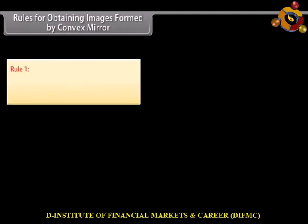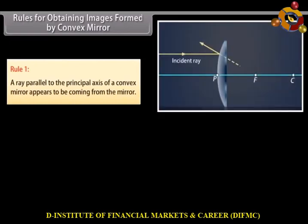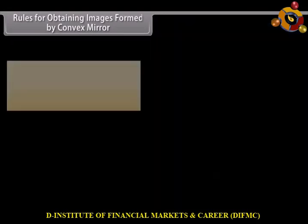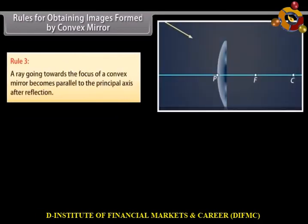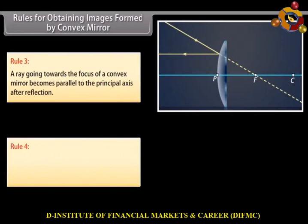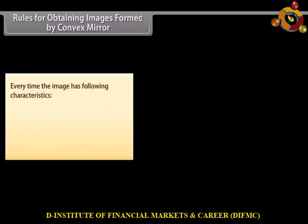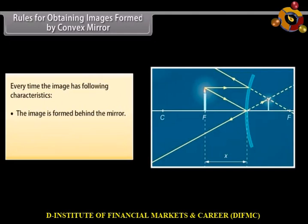Rules for obtaining images formed by convex mirrors. Rule 1: a ray parallel to the principal axis of a convex mirror appears to be coming from the focus behind the mirror. Rule 2: a ray going towards the center of curvature of a convex mirror is reflected back along the same path. Rule 3: a ray going towards the focus of a convex mirror becomes parallel to the principal axis after reflection. Rule 4: a ray incident at the pole is reflected back making the same angle with the principal axis. Every time, the image has the following characteristics: the image is formed behind the mirror — it is virtual, erect, and smaller than the object.